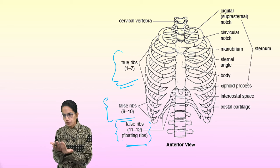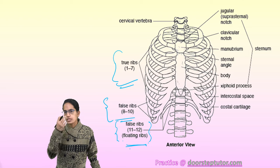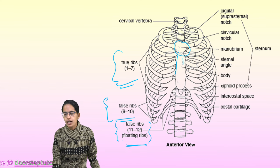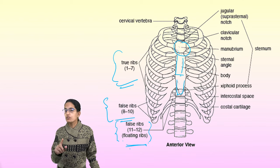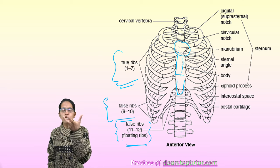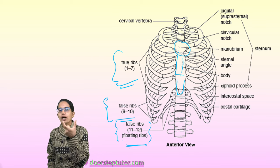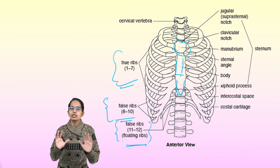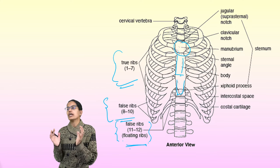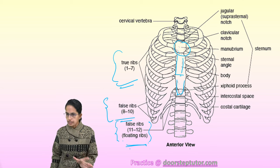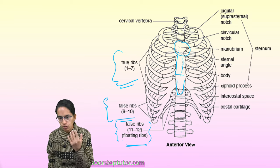The sternum is also known as the breast bone. It is located in the center. The uppermost part of the sternum is the broadest part, the center part is the narrow part, and the lower part is cartilaginous. The sternum is the center bone to which all ribs connect. The complete rib cage structure helps in breathing and also has bone marrow which helps in the production of RBCs.